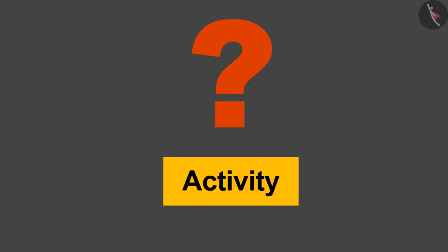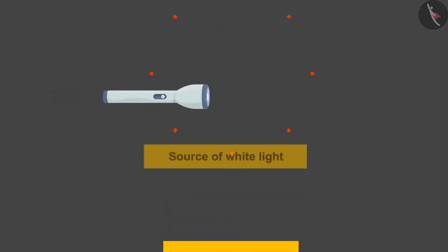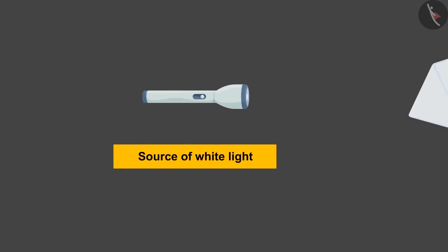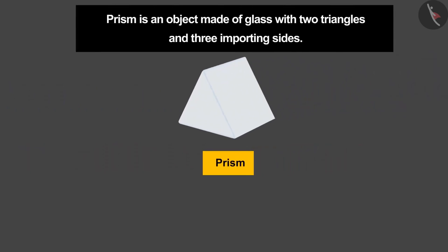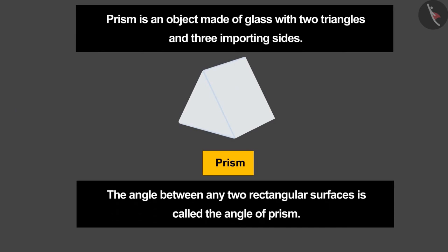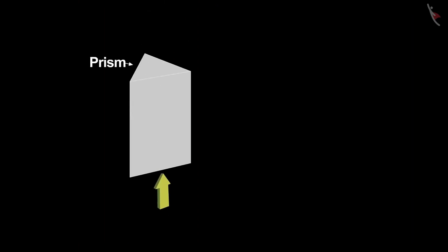To find the answer to the first question, let's do this activity. We need a source of white light and a prism. A prism is an object made of glass with two triangular faces and three rectangular sides. The angle between any two rectangular surfaces is called the angle of the prism. In a dark room, place the prism on the base of the triangle and focus light on any of the rectangular surfaces.